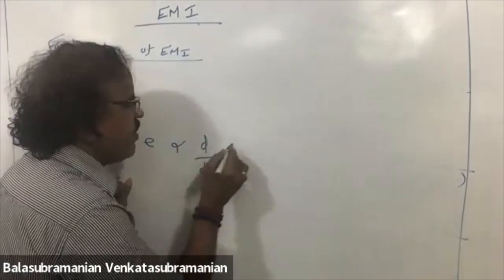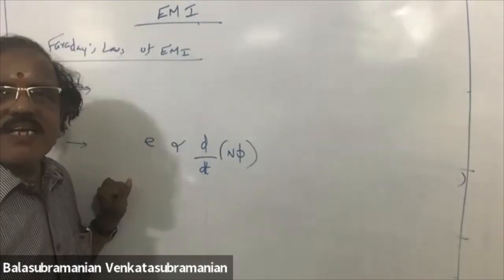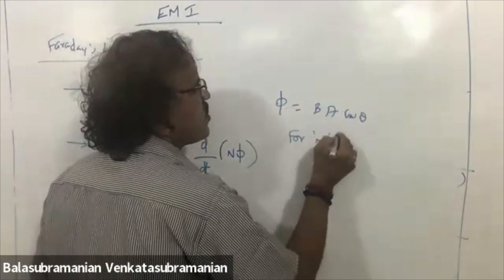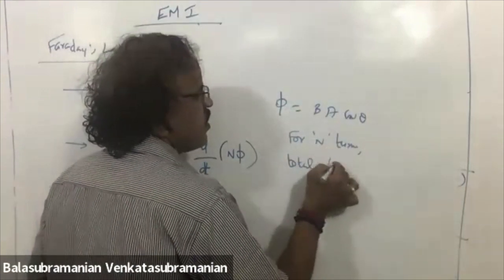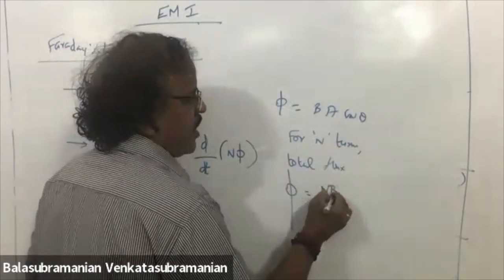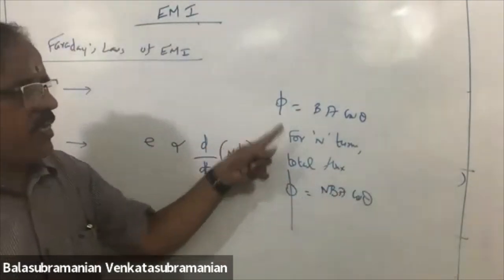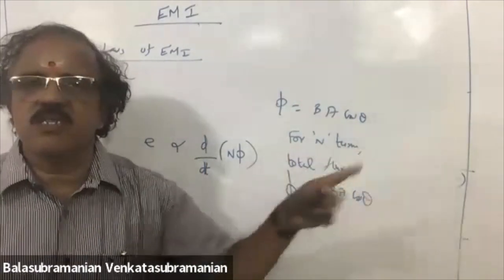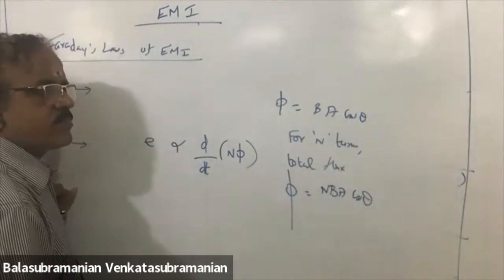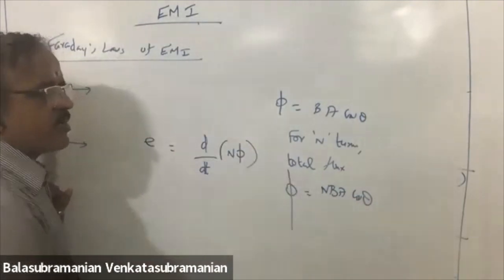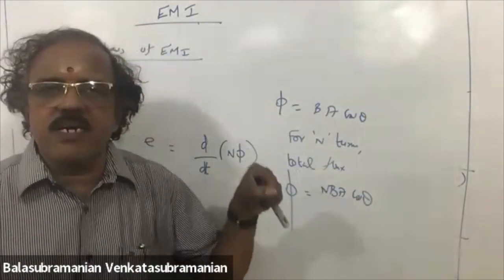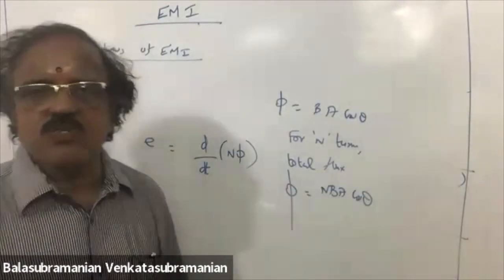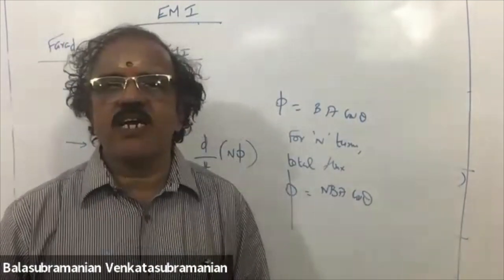The induced EMF depends upon the speed of the magnet. Second law: the EMF induced is numerically equal to the rate of change of magnetic flux. For N turns, the total flux capital Phi equals N·B·A·cosθ. The rate of change of magnetic flux linked with the closed circuit is numerically equal to the EMF induced. This is Faraday's second law of electromagnetic induction.